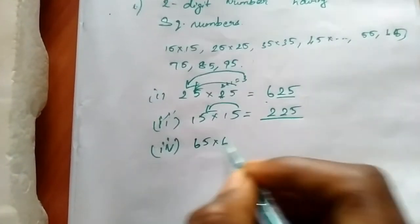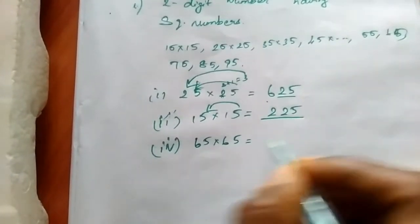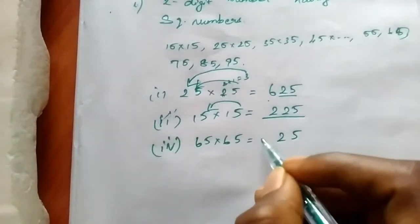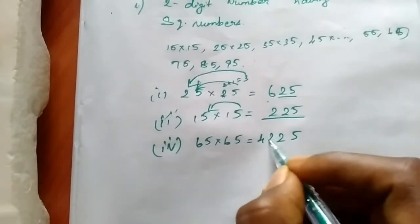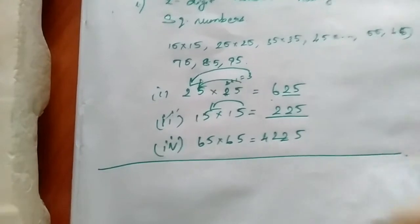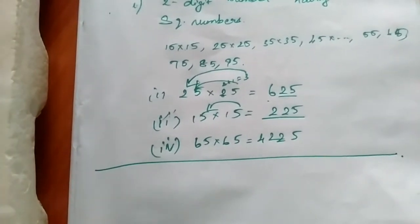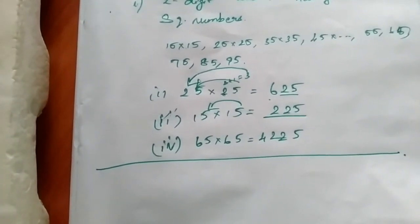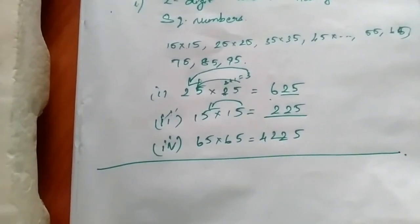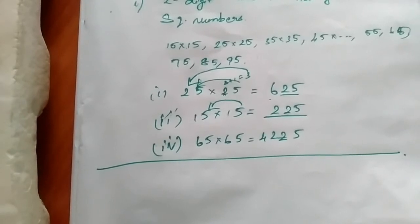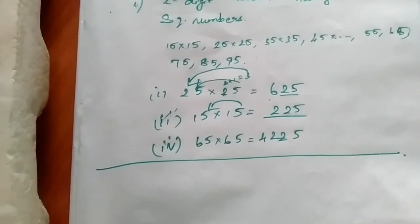Now 65 x 65: the last part is 25, then 6 x 7 is 42. So the answer is 4225. It's pretty simple — you can directly get the answer. It's very simple, and that's all you need to know.